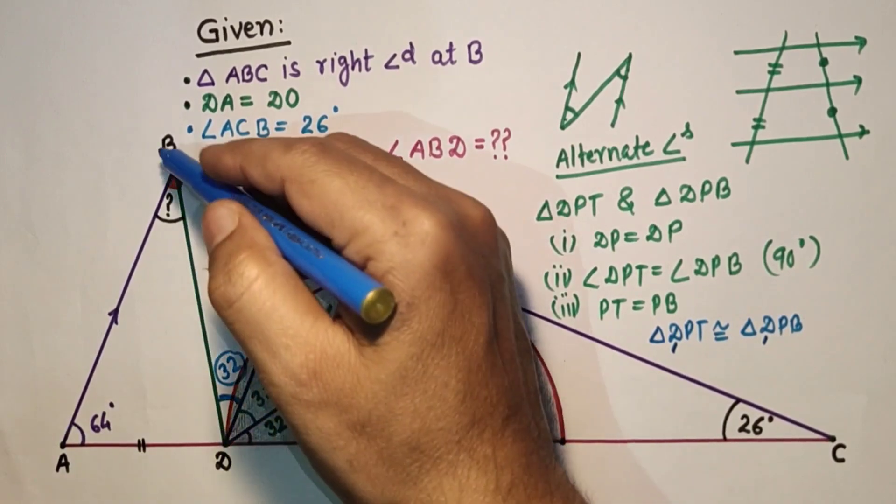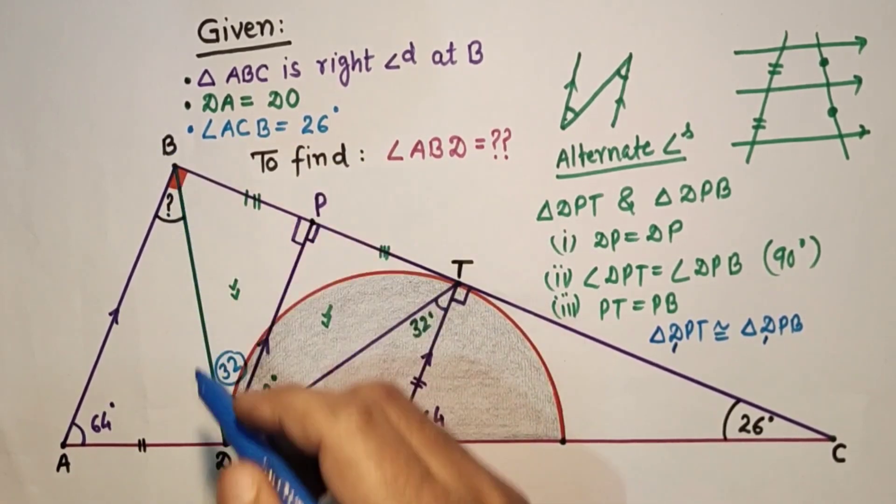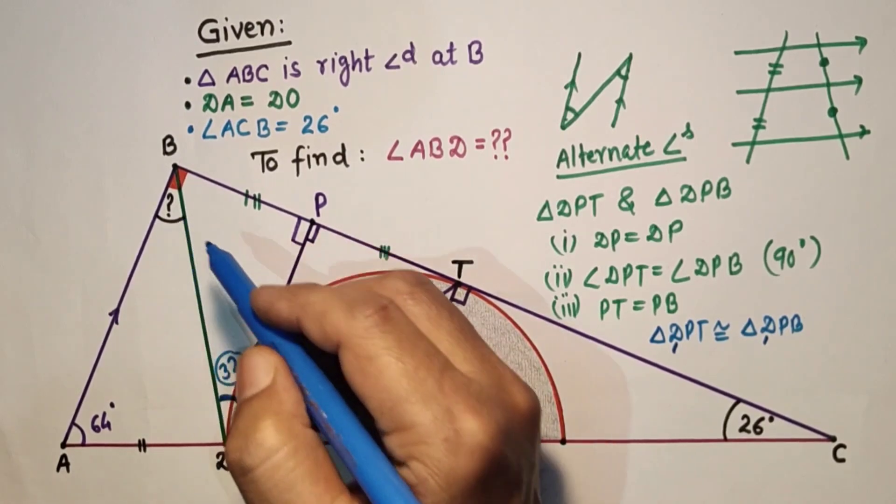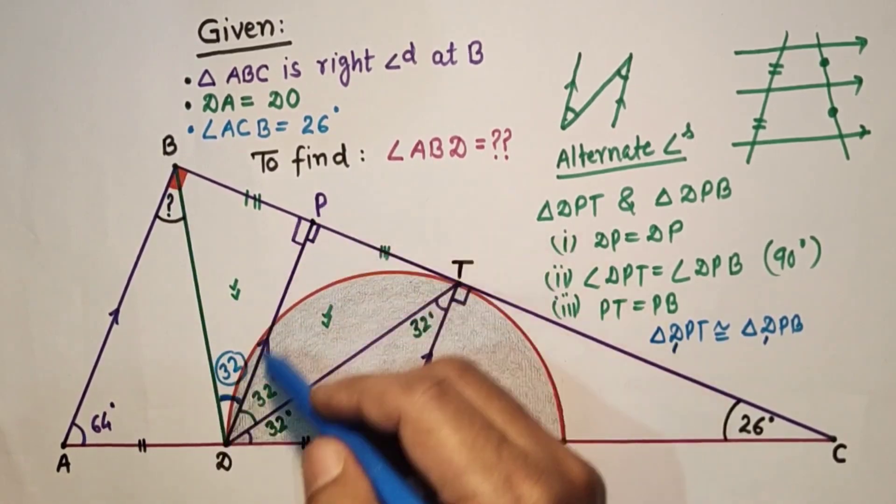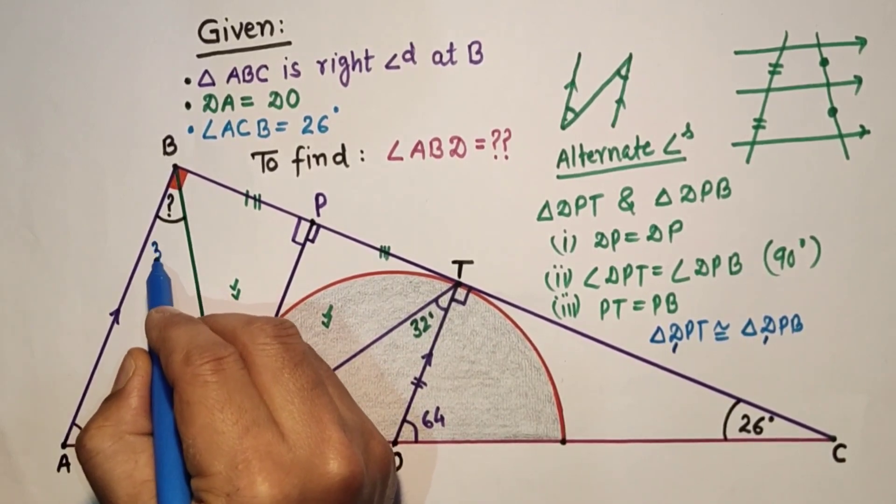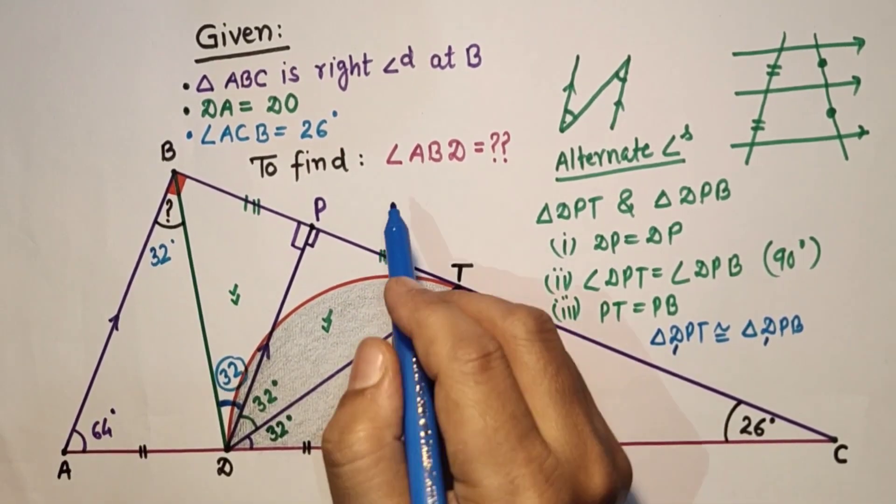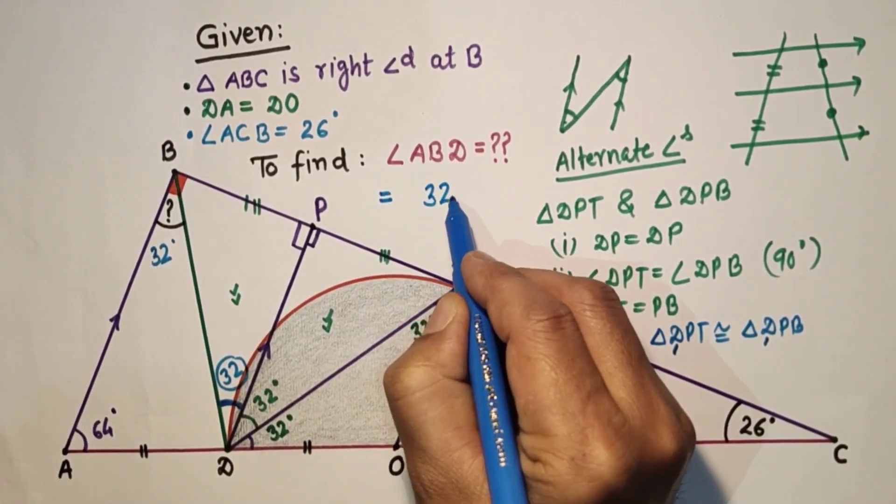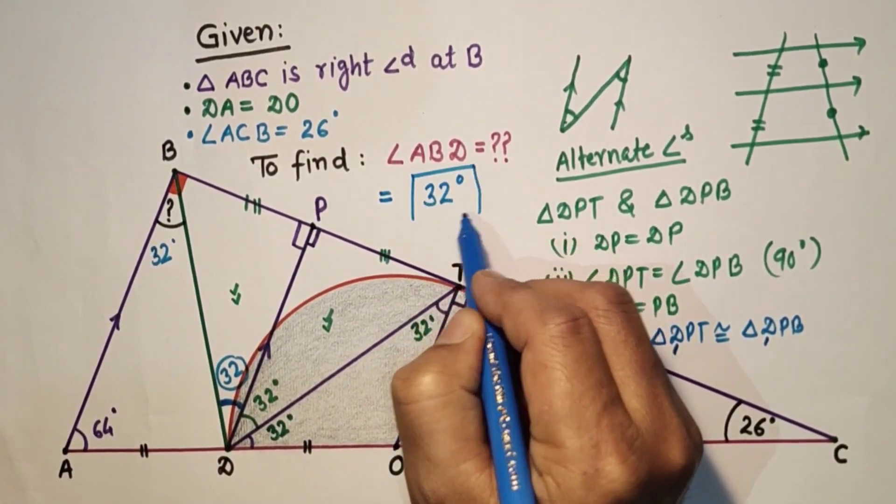Now, these two lines are parallel and this is transversal line. Once again, this is alternate angle, alternate to this. So since lines are parallel, this is transversal, alternate angles are equal. So this angle will be 32. Therefore, angle ABD is equal to 32 degrees, and this is the required answer.